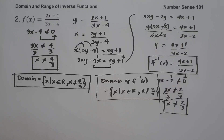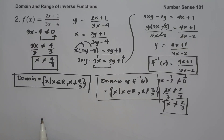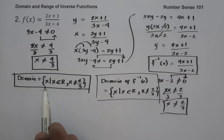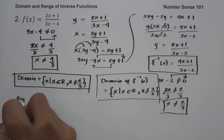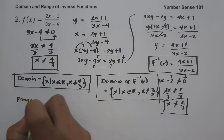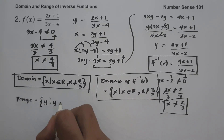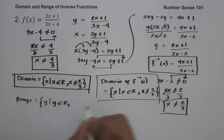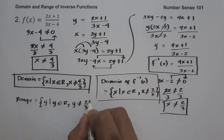To find the range of the original function, we use the domain of the inverse function, because the range of the original function is the domain of the inverse function. So the range is the set of y values such that y is the set of all real numbers except two-thirds.